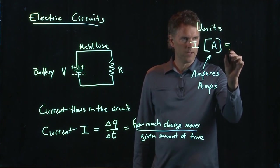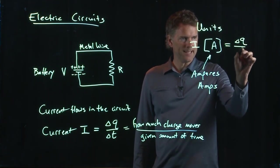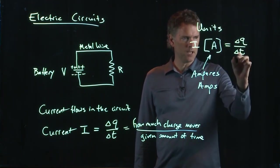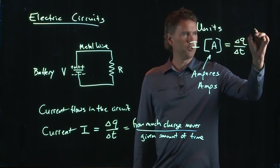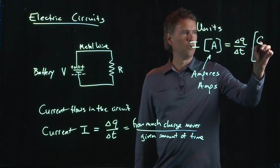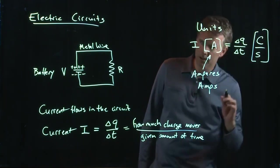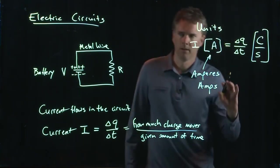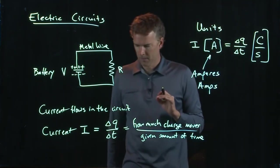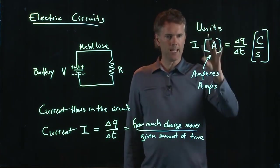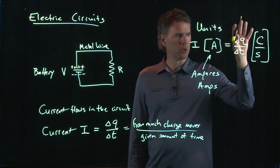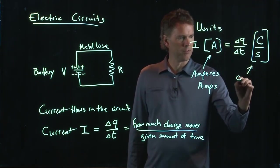What is an amp? Well, it is apparently delta Q over delta T, but we know what that is. Delta Q is coulomb, delta T is seconds. Can you guys still see that over there on the screen? Okay, good. Coulomb per second is an amp. One amp equals one Coulomb per second.